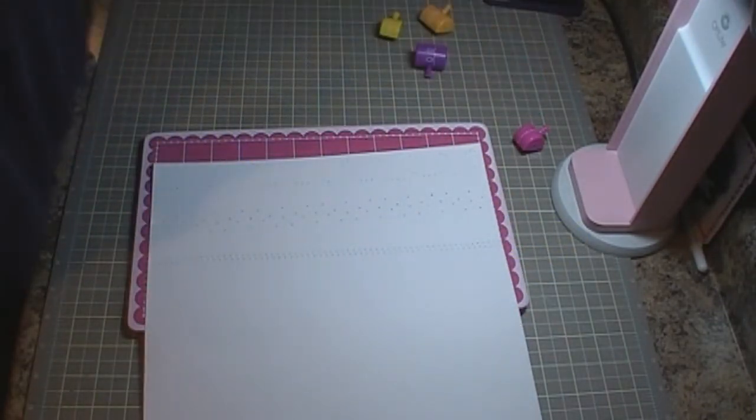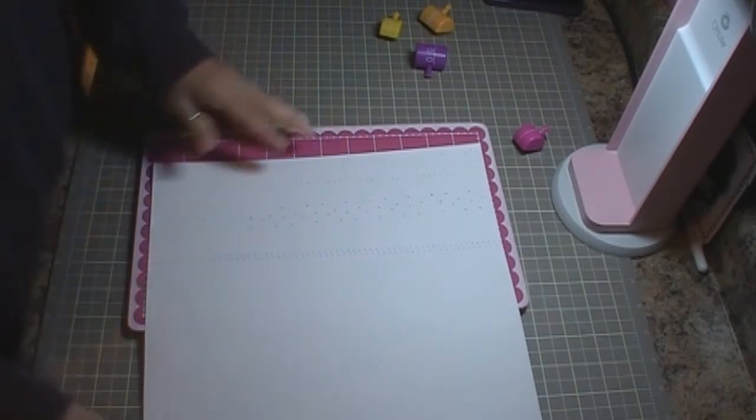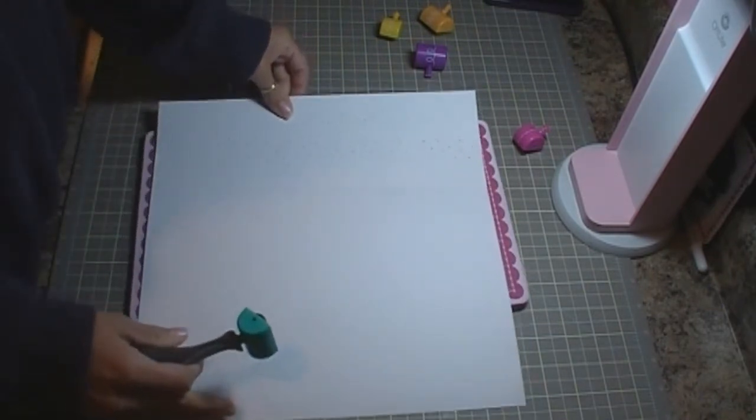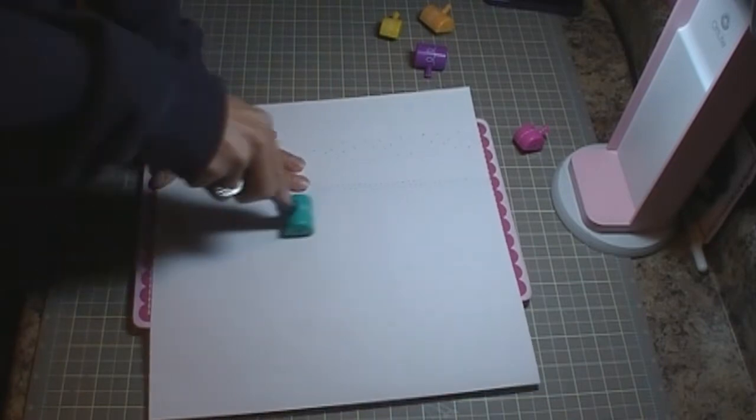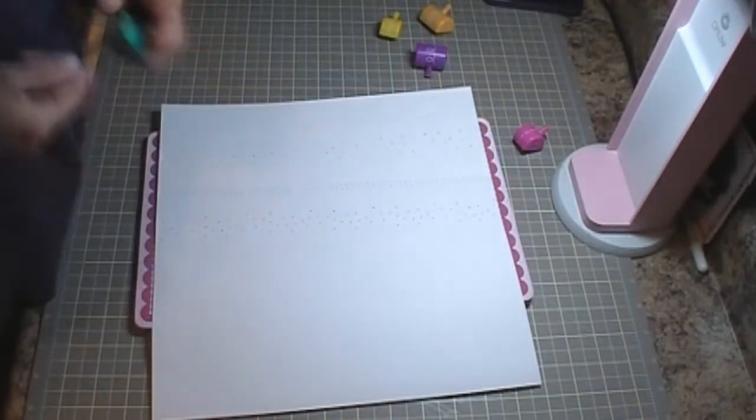And the vine one, same thing. It's going to keep going across the page at a 45-degree angle.